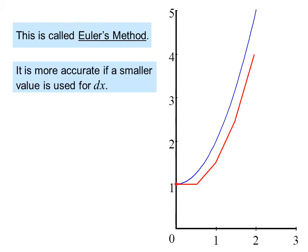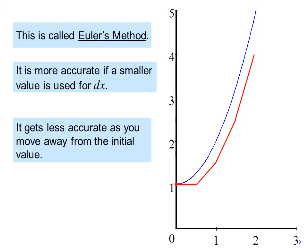It is more accurate if a smaller value is used for dx. It gets less accurate as you move away from the initial value. So if we look at these two graphs, if you measure the error vertically, you see at first the error is not very great. But when we get to x equals 2, the error in y measured vertically is quite a bit larger.